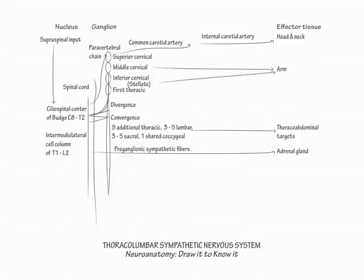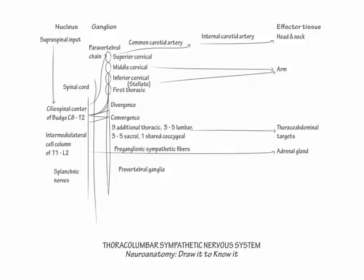Next we will show the splanchnic nerves innervating the four prevertebral ganglia, which span from the lower thoracic to the sacral vertebral column. The prevertebral ganglia are, from superior to inferior: the celiac, aorticorenal, superior mesenteric, and inferior mesenteric ganglia.